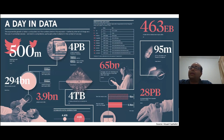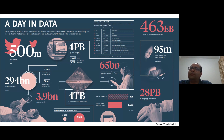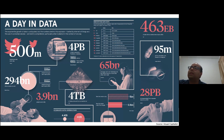If you look at a day in data — how all this is created — we use Twitter, we send tweets, we send emails, we use social media like Facebook and Instagram. The pictures, images, photos and videos we upload, plus all our connected devices and IoT devices — it's all fueled by the internet of things. Three key things: cloud services, our devices, and the connections — all of these help in creating all this data.